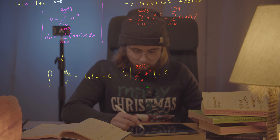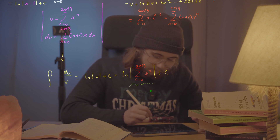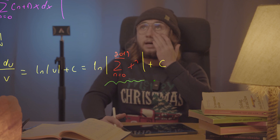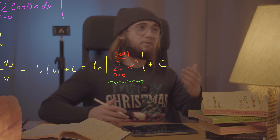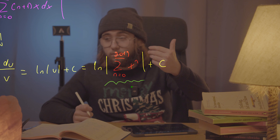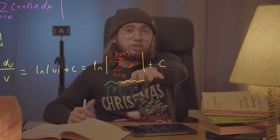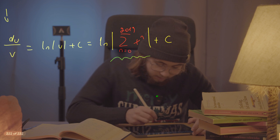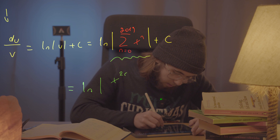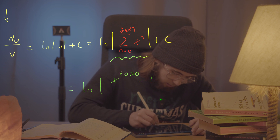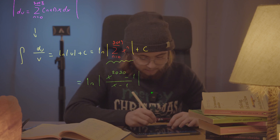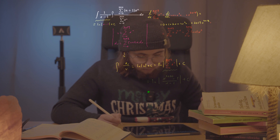We can simplify this expression using the formula for the sum of a finite geometric series. What we'll get is the natural log of the absolute value of x to the power of 2020 minus one, all divided by x minus one, then plus a constant.